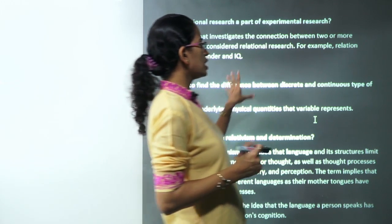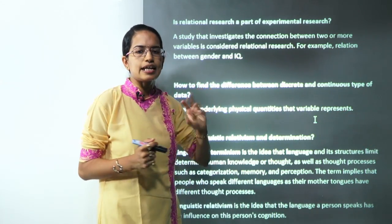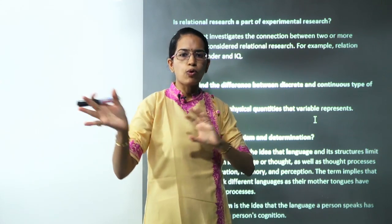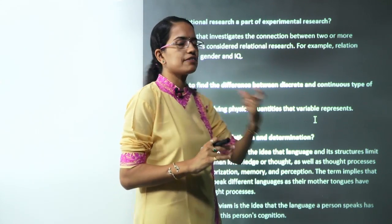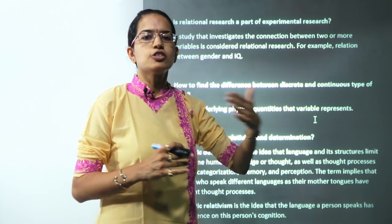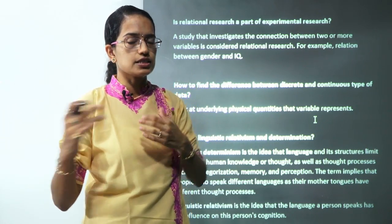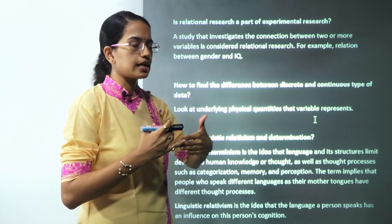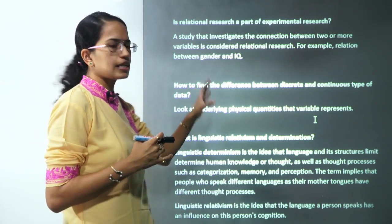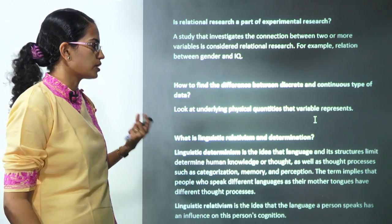How do you find the difference between discrete and continuous data? Discrete data consists of mutually exclusive categories — male, female, young, old. Continuous data can take values like weight: 20.4 kg, 20.5 kg, 20.6 kg, 21 kg. That is the basic difference between discrete and continuous data, which can be understood by looking at the underlying physical quantities.